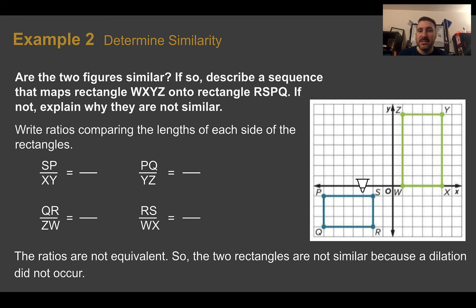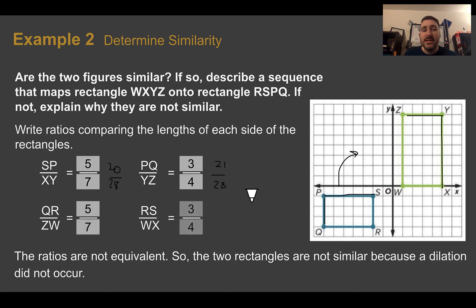So let's look at corresponding sides. We have SP and XY. The ratio for here is 5 to 7. SP was 5 units long, XY was 7 units long. We need to check to see if the other ratios are the same. So let's do PQ to YZ. PQ was 3, YZ was 4. Are those the same? Well, if you're not sure, let's find a common denominator to see if they are equal fractions. So let's do 28. 7 times 4 is 28, so 5 times 4 is 20. 4 times 7, so 3 times 7 is 21. Are those the same fraction? No. Since right away those are not the same ratio, they are not similar because the same scale factor wasn't used, meaning we didn't have a dilation.